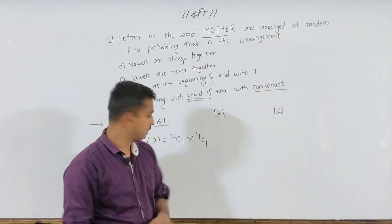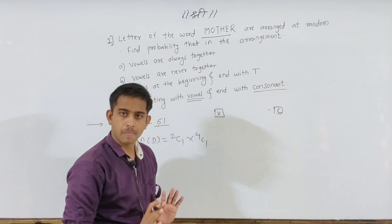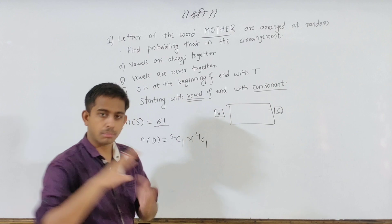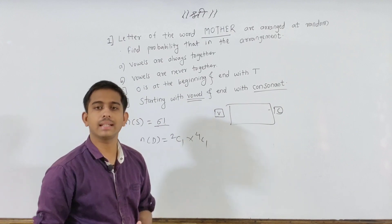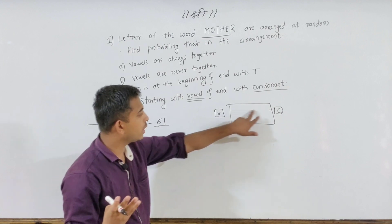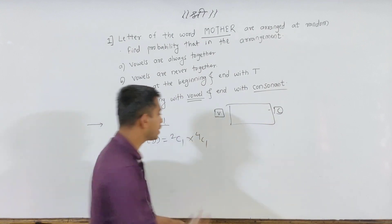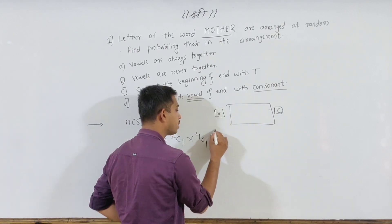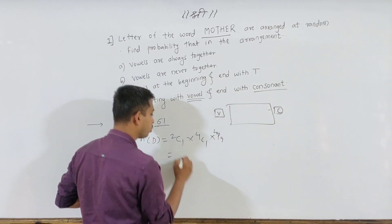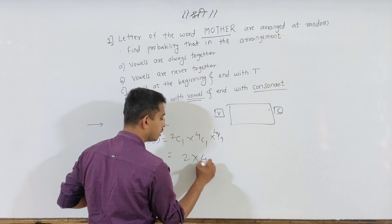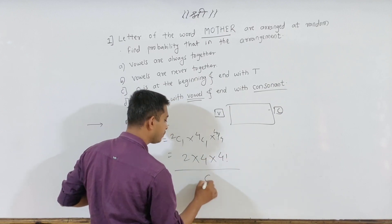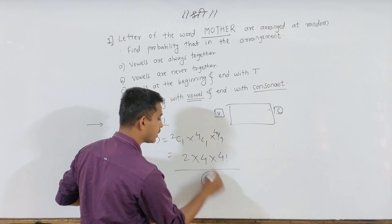First and last positions are fixed. The remaining 4 letters change — we arrange 4 letters in 4 positions. So n(D) = 2C1 × 4C1 × 4 factorial. Therefore P(D) = 2C1 × 4C1 × 4! divided by 6 factorial.